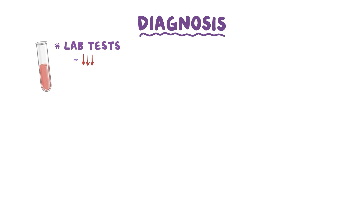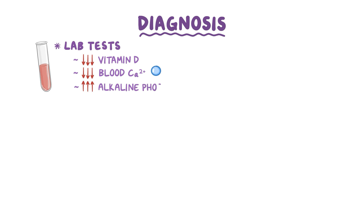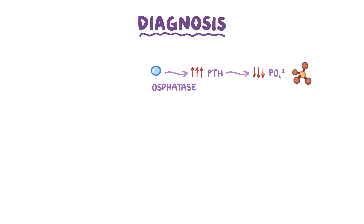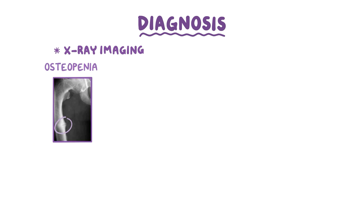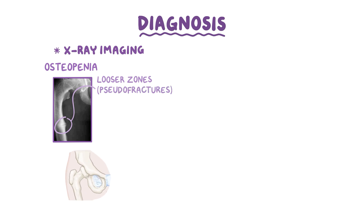Rickets and osteomalacia are usually diagnosed with lab tests, which show abnormally low vitamin D levels in blood serum, low blood calcium, and elevated serum alkaline phosphatase. As a result of low calcium, there may also be high PTH, which may also lead to low serum phosphate. X-ray imaging might show signs of decreased bone mineral density, or osteopenia. First, there are Looser zones, which are bands of low bone density that form on the surface of the bone. They look a bit like bone fractures, so they're also called pseudofractures, and they frequently develop in the inferior and superior pubic rami of the pelvic bone.